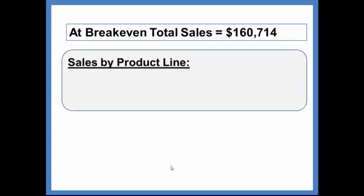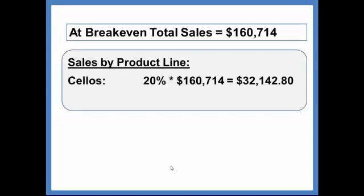So recall that we computed total breakeven sales dollars to be $160,714. So if we want to break this down by product line, 20% of that, 20% of $160,714 says that sales of cellos has to be $32,142.80.